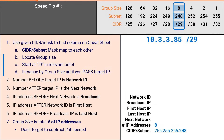We were provided a group size of 8, which means we would start at .0 and increment by 8 until we pass our target IP of .85. Starting at .0, .8, .16, .24, .32, .40 — we could continue, but it would take a long time to get to 85, which brings us to our first speed tip.